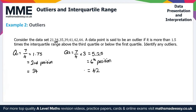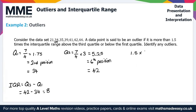Now, a point is an outlier if it is more than 1.5 times the IQR above Q3 or below Q1. The IQR is Q3 minus Q1, so that's 42 minus 34, which gives us 8. Therefore, 1.5 times the IQR is 1.5 times 8, which gives us 12.